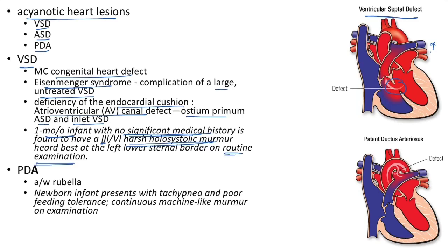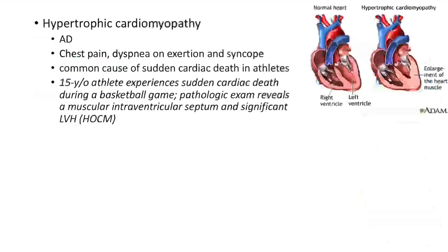Patent ductus arteriosus is associated with rubella. Mnemonic: PDA ends with A, and rubella also ends with A. Clinical case: newborn infant presents with tachypnea and poor feeding tolerance. A continuous machine-like murmur is heard on physical examination. There is a communication between the aorta and pulmonary artery.